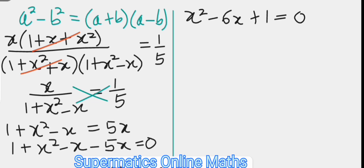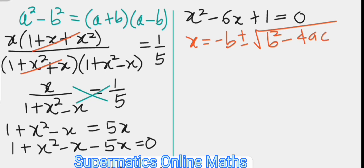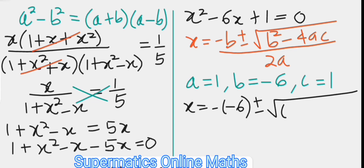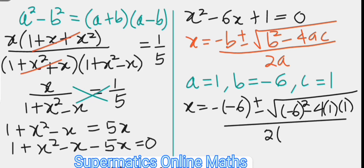So we use the quadratic formula: x equals negative b plus or minus the square root of b squared minus 4ac, all over 2a. Here, a is the coefficient of x squared which is 1, b is the coefficient of x which is negative 6, and c is the constant term which is 1. Therefore x equals negative (negative 6) plus or minus the square root of (negative 6) squared minus 4 times 1 times 1, over 2 times 1.